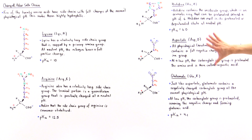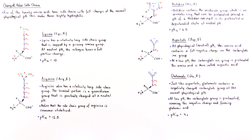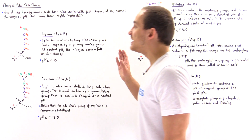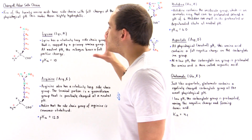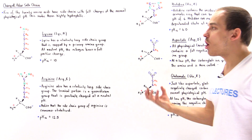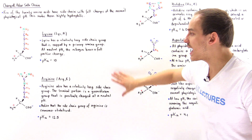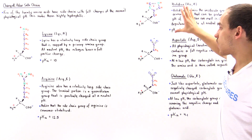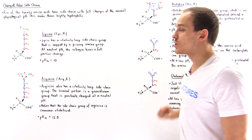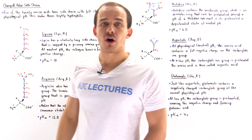So those are the two acidic amino acids, while lysine, arginine, and histidine are basic amino acids. All five of these amino acids are very highly hydrophilic because they bear a full charge — a full positive charge in the case of the basic amino acids, and a full negative charge in the case of the acidic amino acids.